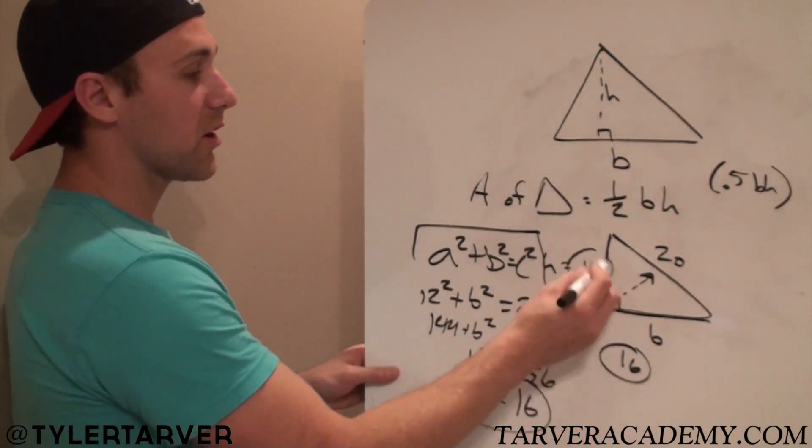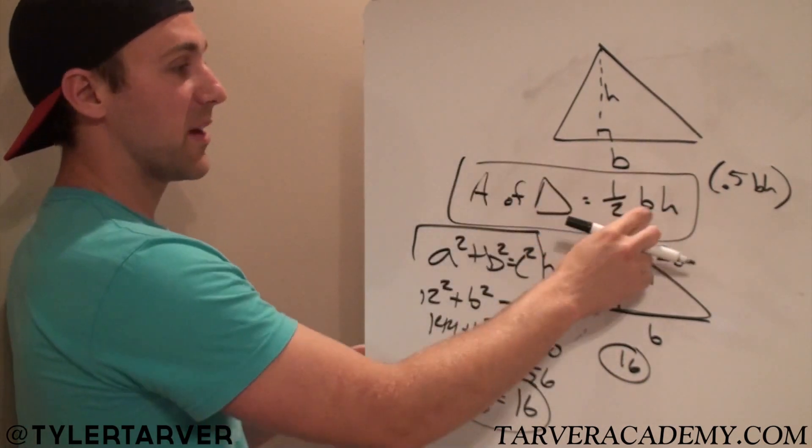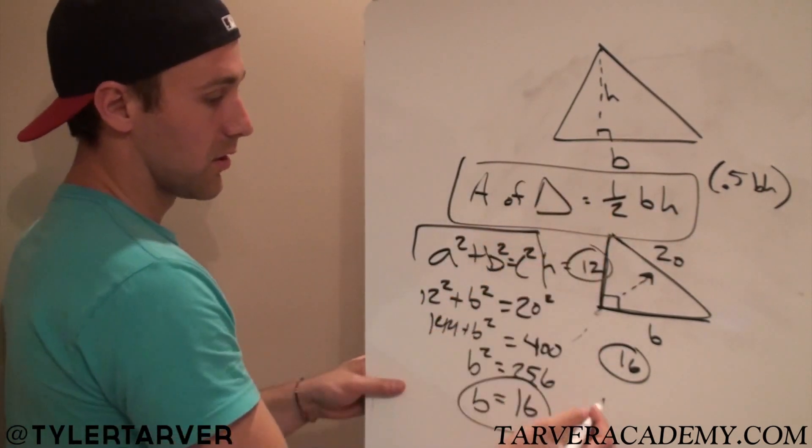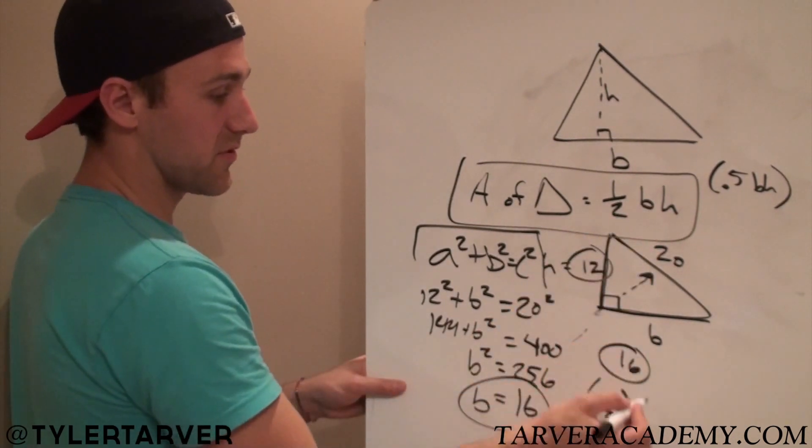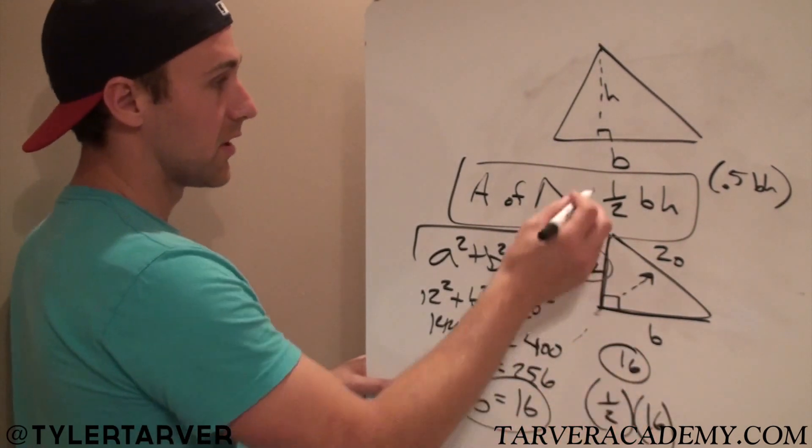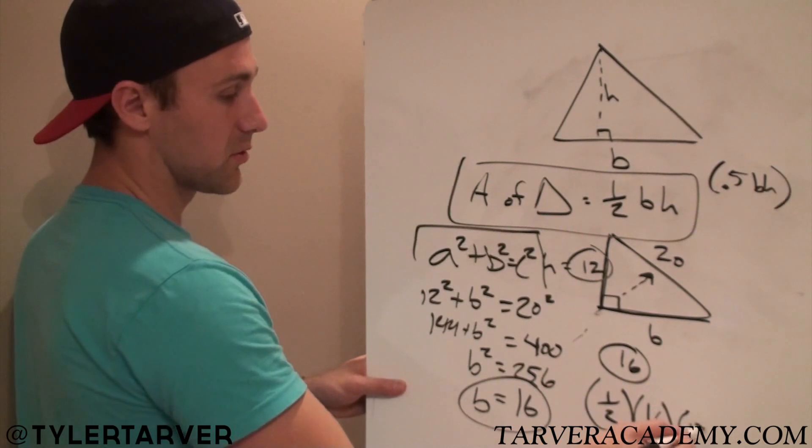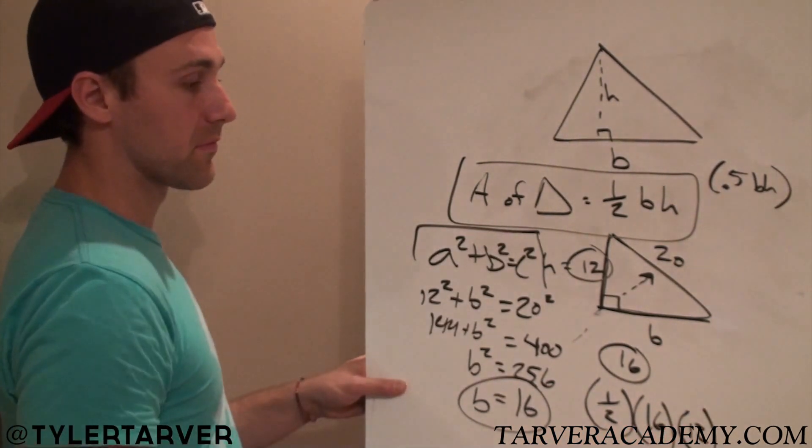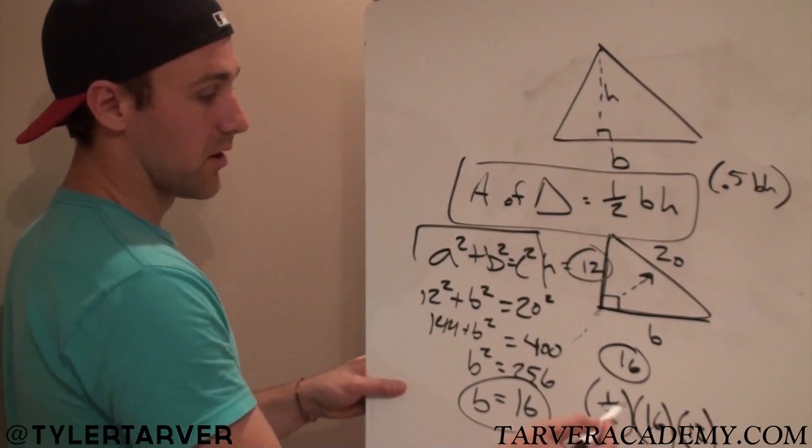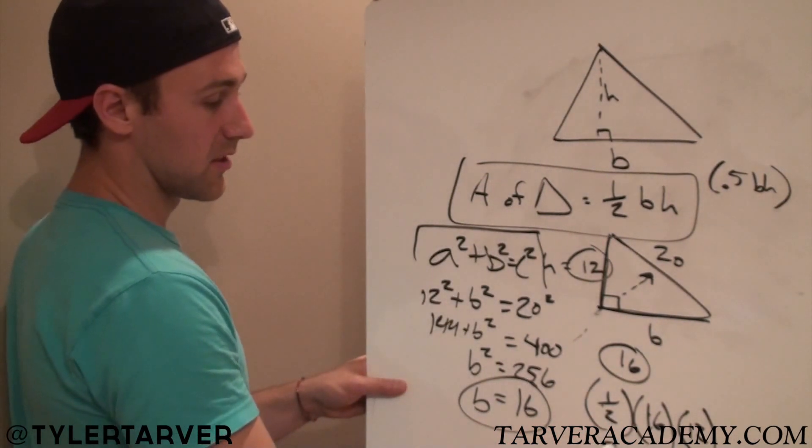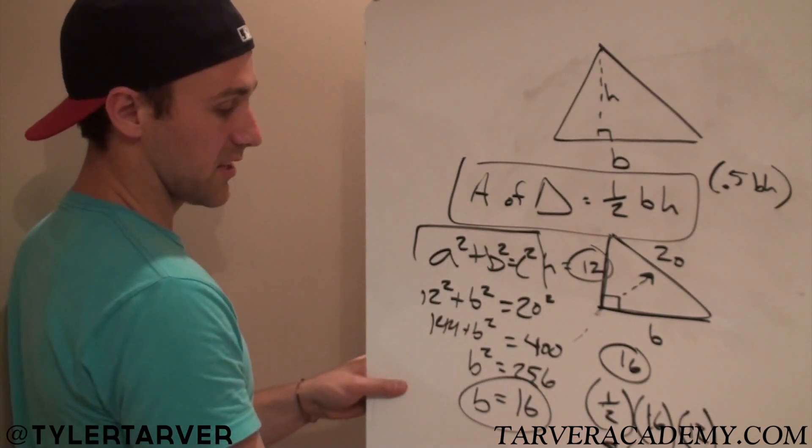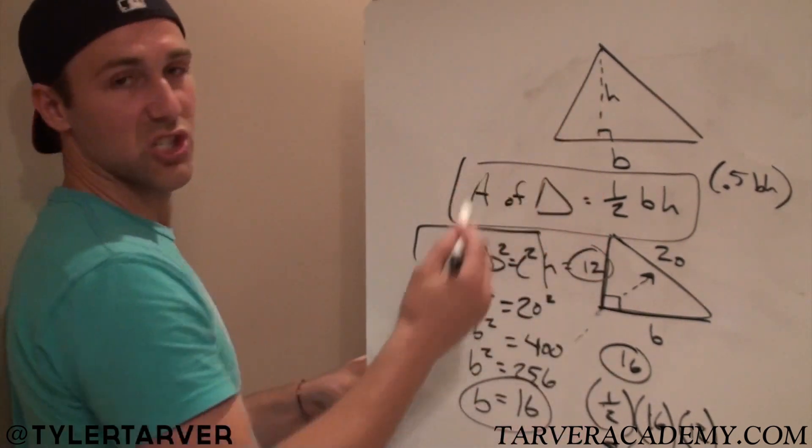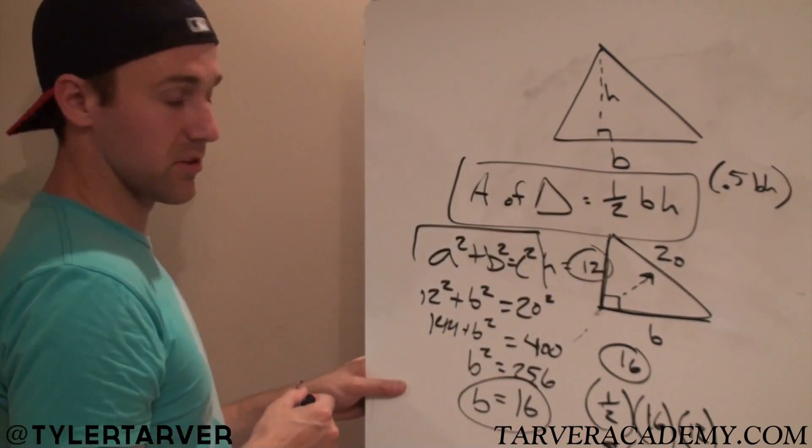Now, what all did we need to do this formula? One-half base times height. We need one-half, that's its own, times the base, which we just found is 16, times the height, which we said was 12. Multiply those together. One-half times 16 is 8. 8 times 12 is 96. And whatever inches squared, or whatever you're trying to use, would be your answer.